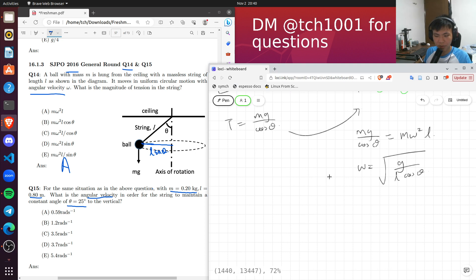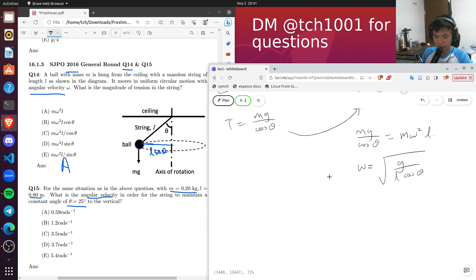Okay, so substituting in the values, we get that omega equals square root of 9.81 over 0.8 times cosine 25 degrees.